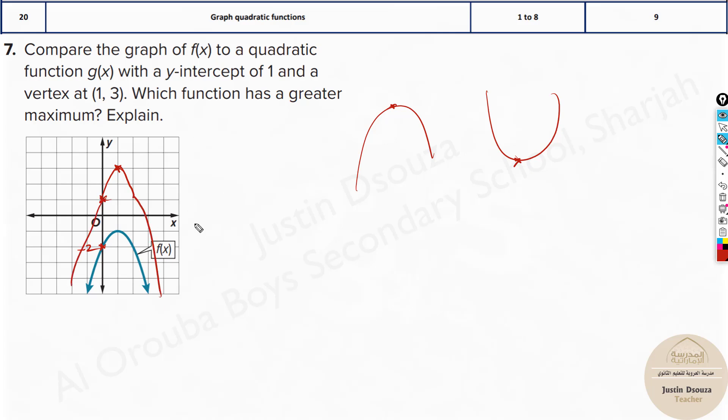So, now, which is having a maximum? The maximum over here for f(x) is (1, -1). Whereas, this is having a maximum of (1, 3). By 4 units, 1, 2, 3, 4 units, g(x) graph is having a bigger maximum. So, the function which is having greater maximum is the second graph, g(x). That is the answer.